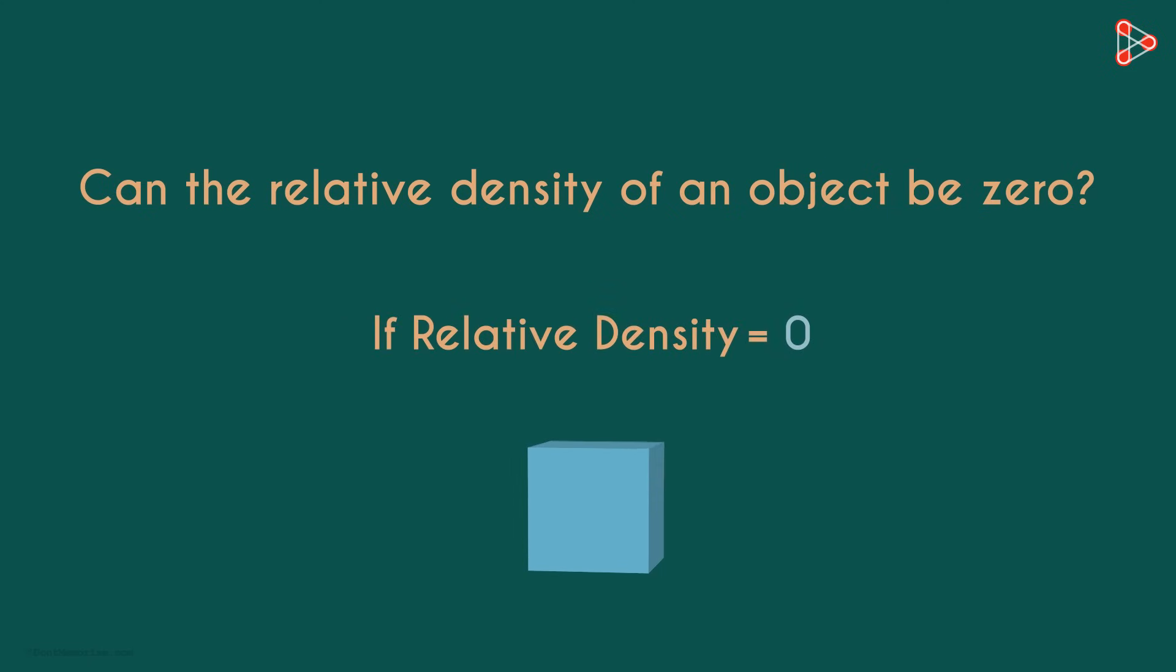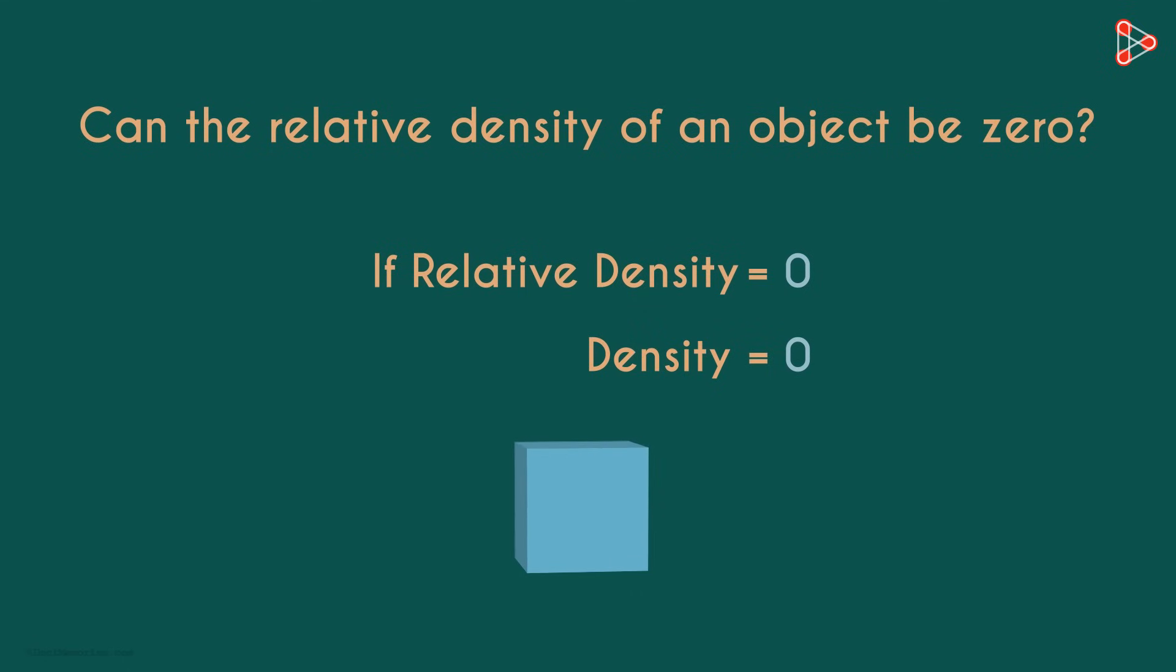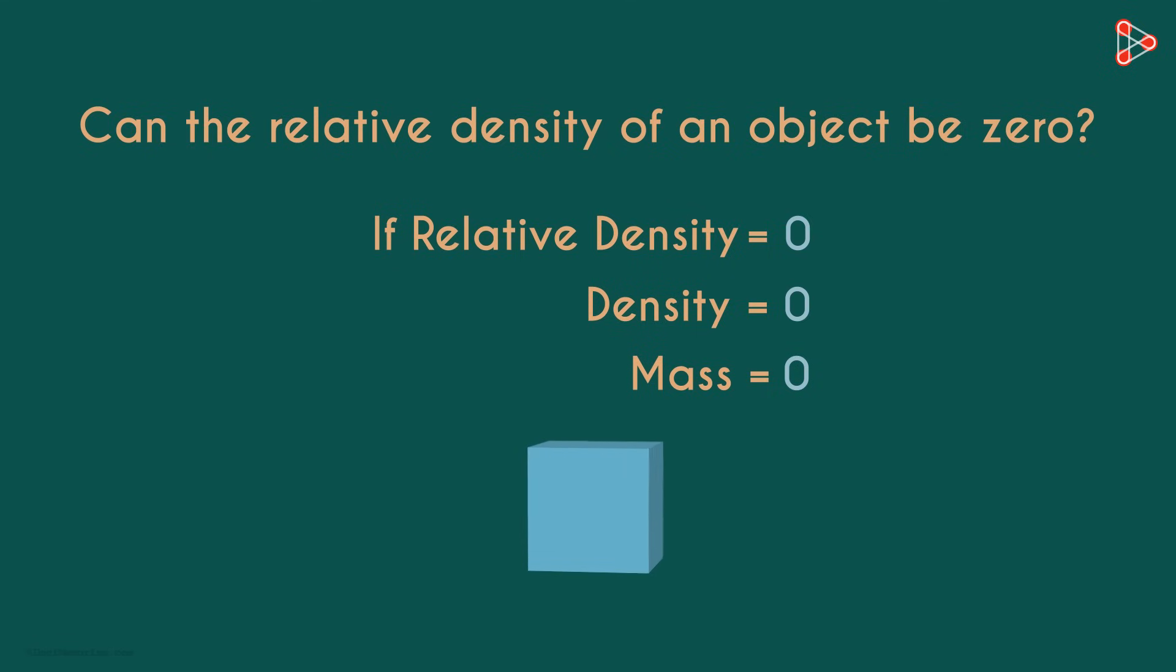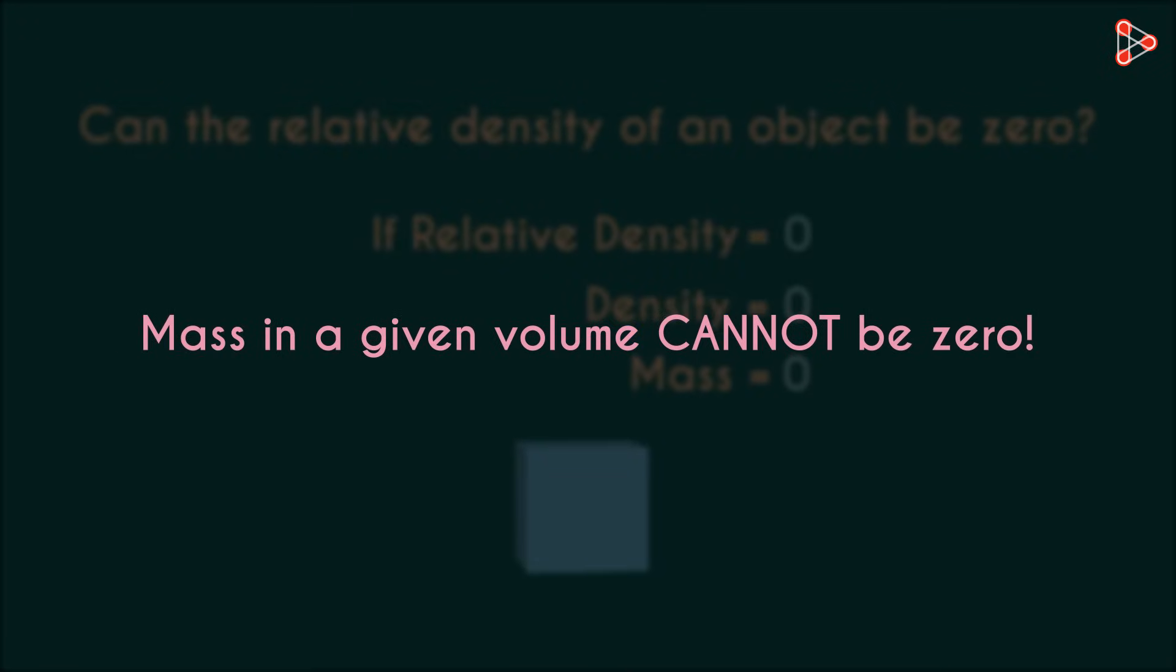Because if the relative density is 0, it will mean that the density of the substance is 0. Which in turn will mean that the mass of the substance is 0. For any given substance, its mass in a given volume cannot be 0.